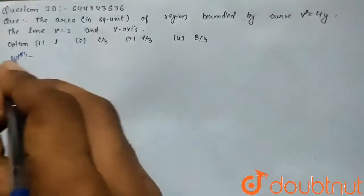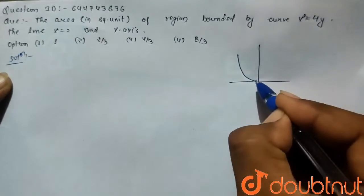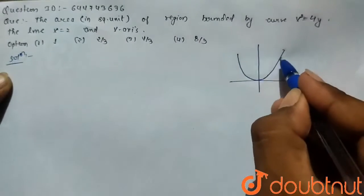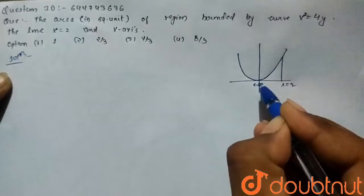So in the solution part, we draw the graph of x squared equals 4y. It's like that, and the line x equals 2. This is our x-axis and this is x equals 0.